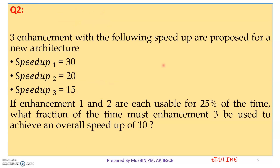This is the next enhancement element. Three enhancements with the following speedups are proposed for a new architecture: speedup 1, speedup 2, speedup 3. The speedup time is calculated using Amdahl's law. Enhancement 1 and 2 are each usable for 25% of the time. What fraction of the time must enhancement 3 be used to achieve an overall speedup of 10?